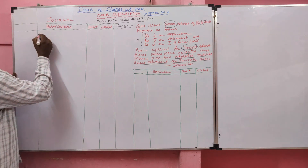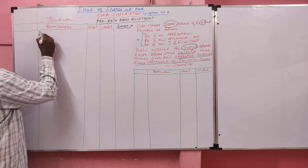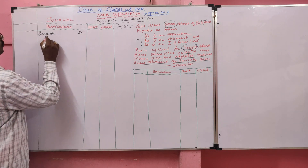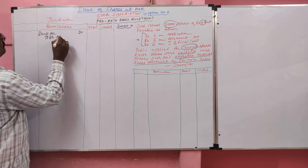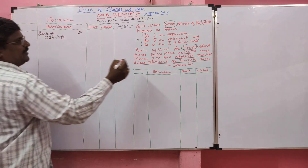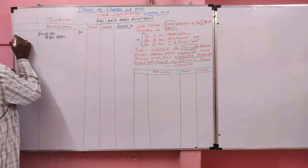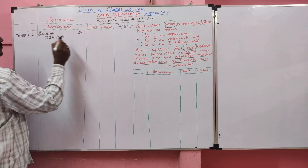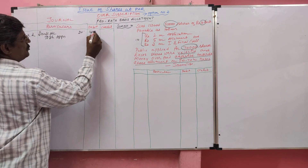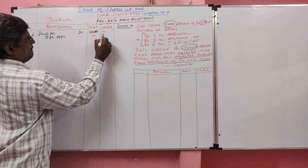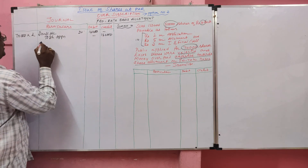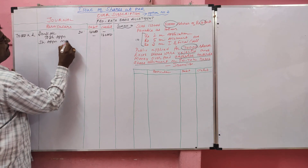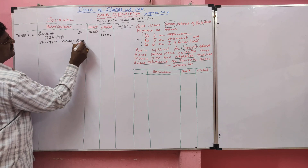First entry: we will record the journal for application. The entry is Bank Account Dr to Share Application. How many share applications were received? 70,000. On application, how much are we collecting? Rs. 2. So the amount is Rs. 1,40,000. Narration: Share application money received.